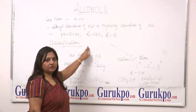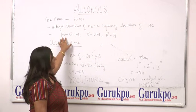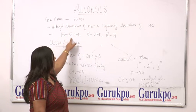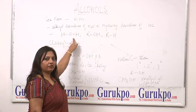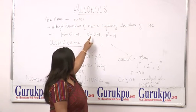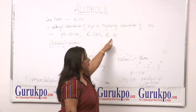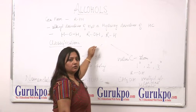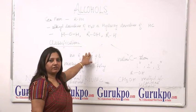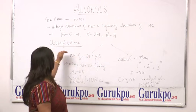Hydrocarbons means hydrogen and carbon. Here it is HOH — if you remove this hydrogen, it will become the alkyl derivative of water. Similarly, if we remove this R group and again remove this H group, these are considered to be derivatives, as they are obtained from some other compounds.